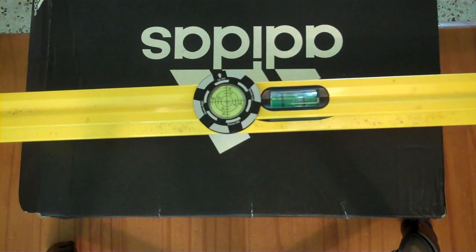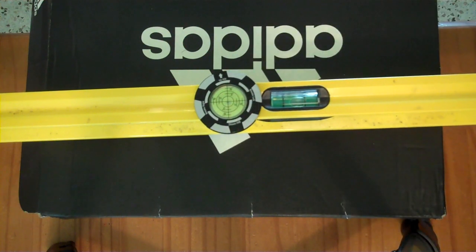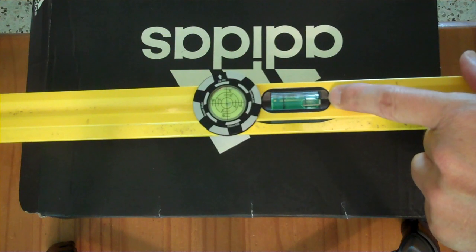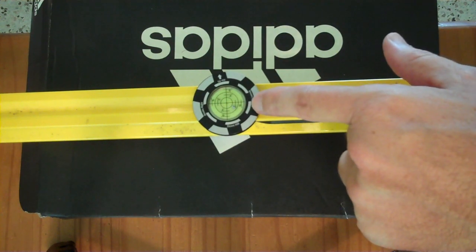Now when I move this up, you can see that this bubble stays right in the crosshairs for a while until this gets quite a ways away and then this guy goes off to the side.